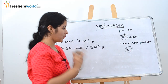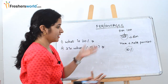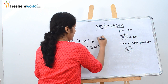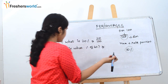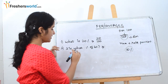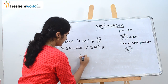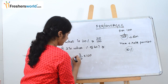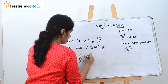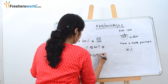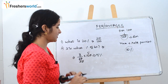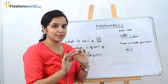Let's solve a couple of small problems. What is 20 percent? As we just discussed, 20 percent is nothing but 20 by 100. Next: 3 is what percent of 60? So 3 divided by 60, multiplied by 100, which is nothing but 5 percent. So 3 is nothing but 5 percent of 60. This is the basic concept in percentage.